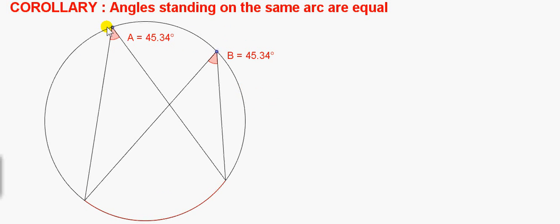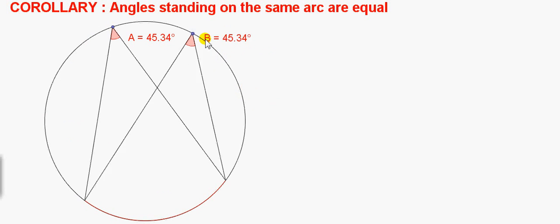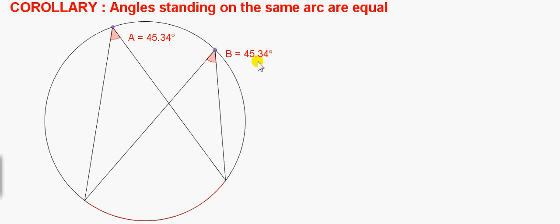And it doesn't matter how I move these around. Both angles, A and B, are the same. In this case, they happen to be 45.34 degrees. The value of the angle actually depends on the length of this arc here. Or, well, actually, it depends on the ratio of the length of this arc to the circle. But that's not too important.